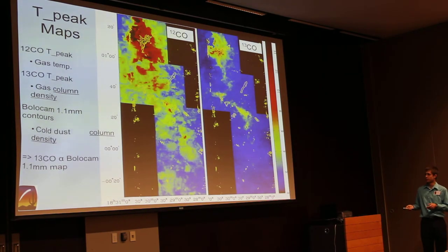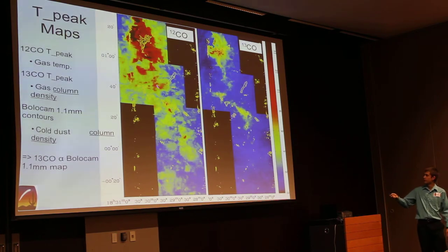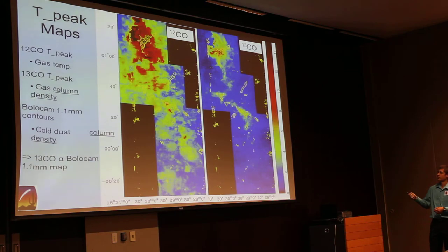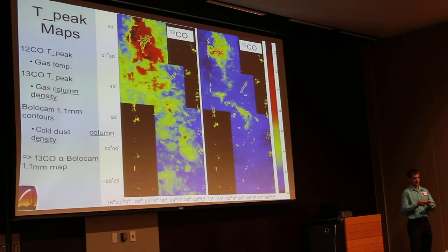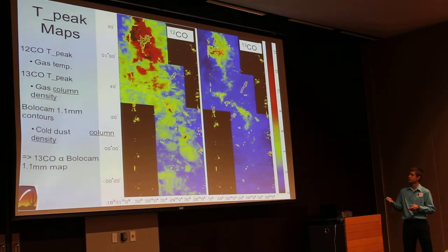Here I show a similar plot, but instead of point sources, I'm showing the extended contours of the 1.1-millimeter dust emission in yellow, representing the most column-dense regions of cold gas. I overlay that on peak temperature maps of 12 and 13-CO: 12-CO intrinsically measures the temperature of the cloud, whereas 13-CO measures the column density of the CO gas. You therefore expect the PoloCamp and 13-CO data to agree, which you can observe here.